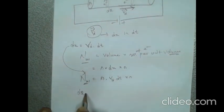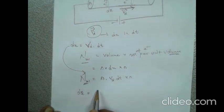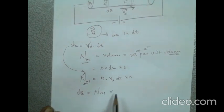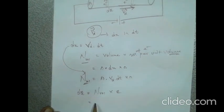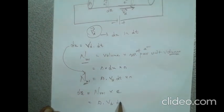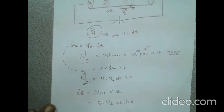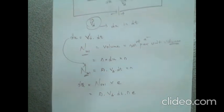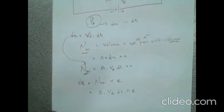The total charge dQ in this volume equals the number of electrons in the volume multiplied by the charge of a single electron. Therefore, dQ equals A into VD into dt into n into e.